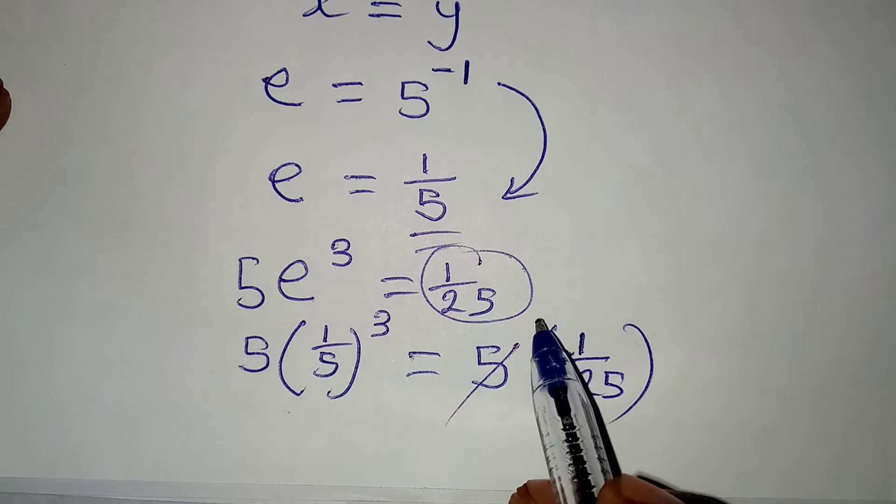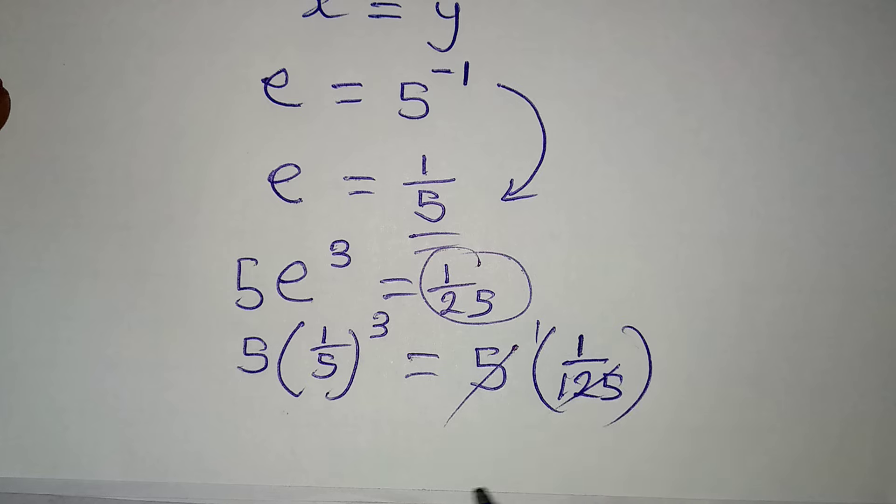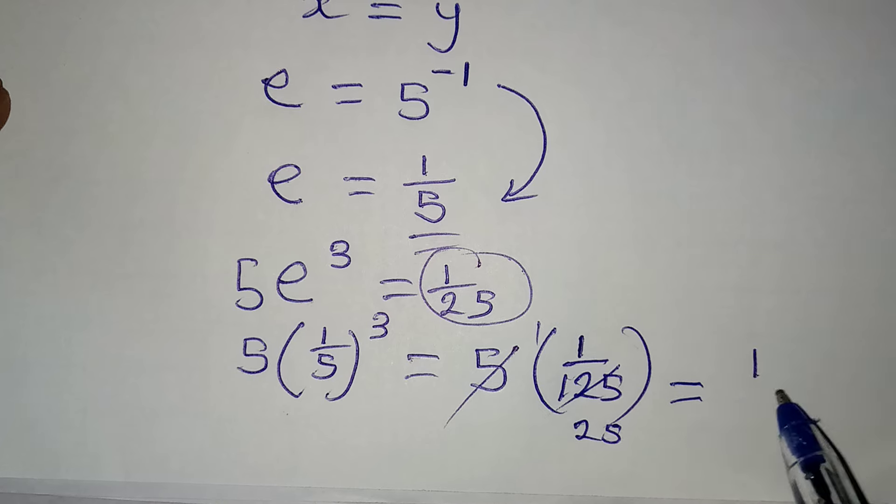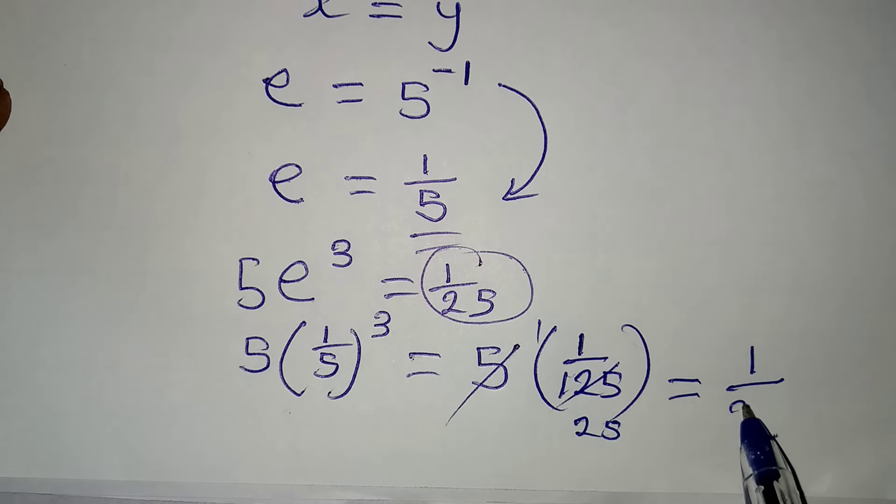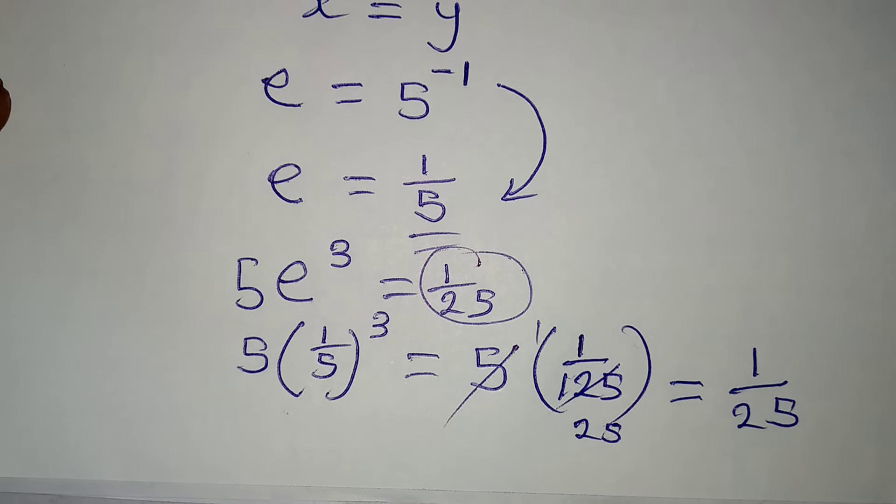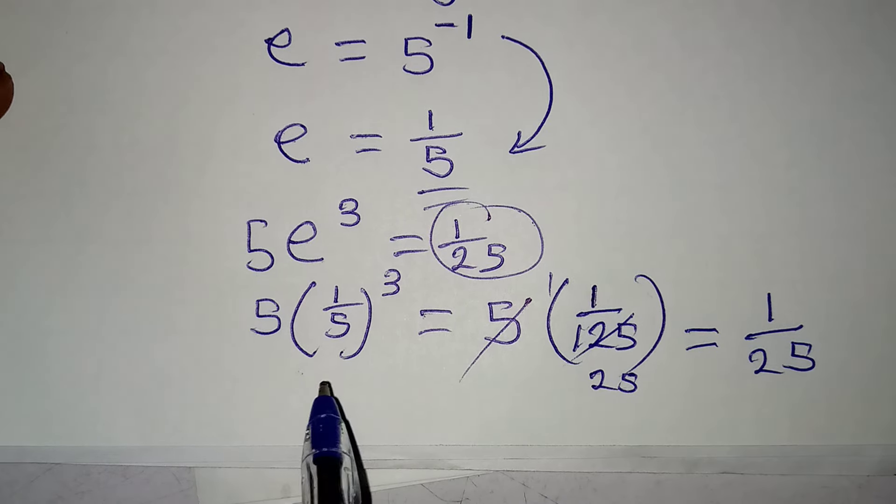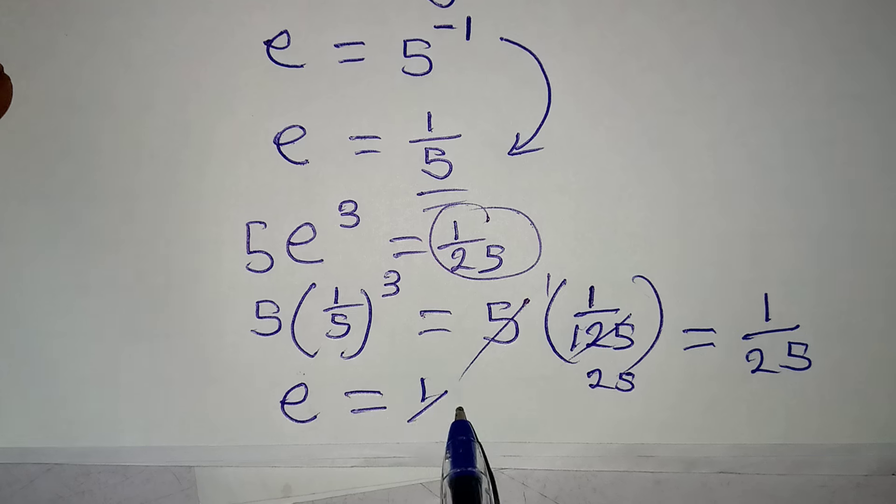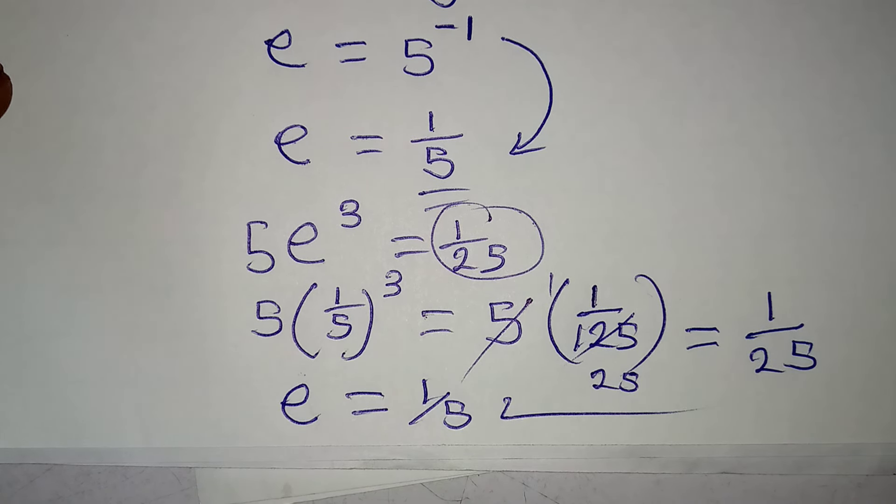Now, 5 will go into itself one time. 5 will go into this. We have 25. Therefore, this is giving us 1 over 25, okay? So we can now say that e is actually equal to 1 over 5. Thank you for watching.